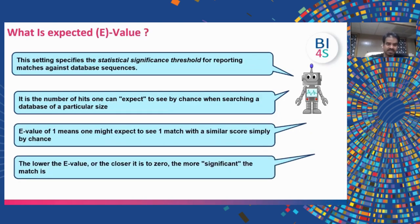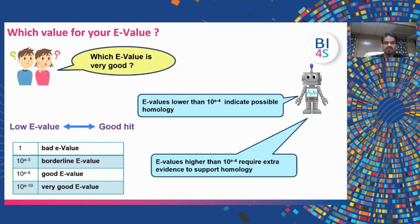So what is E-value? The E-value specifies the statistical significance threshold for reporting matches against databases. It is the number of hits one can expect to see by chance when searching a database of a particular size. For example, an E-value of 1 means we can expect one match by chance. The lower the E-value — closer to zero — the more significant the match. An E-value lower than 10 to the power of minus four indicates possible homology. An E-value of 10 to the power of minus three is borderline, 10 to the power of minus four is a good E-value, and anything more significant than minus 10 is a very good hit we can consider for further analysis.